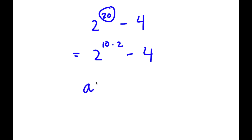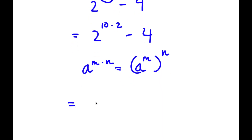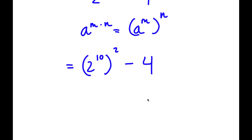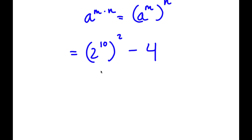If I have something in the form a to the power of m times n, I can write this as a to the power of m to the power of n. So in this case, 10 we can think of as m and 2 as n. So we can write 2 to the power of 10 times 2 as 2 to the power of 10 to the power of 2. Now 2 to the power of 10 is the same thing as 1,024. So now I have 1,024 to the power of 2 minus 4.